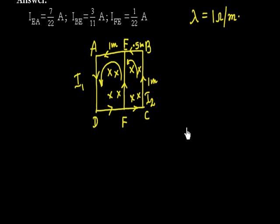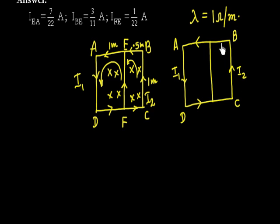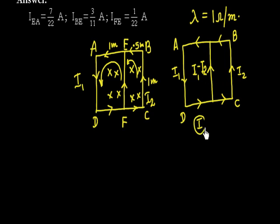Let me redraw the figure. We have the full loop ABCD with a connector EF. In Loop 1, the circulating current is I1. In Loop 2, the circulating current is I2. In the shared segment EF, the net current is I1 minus I2 upward.